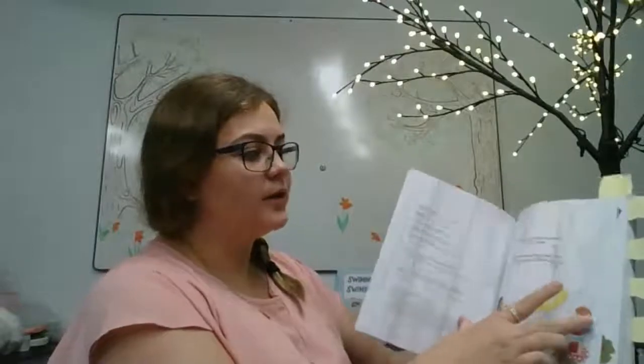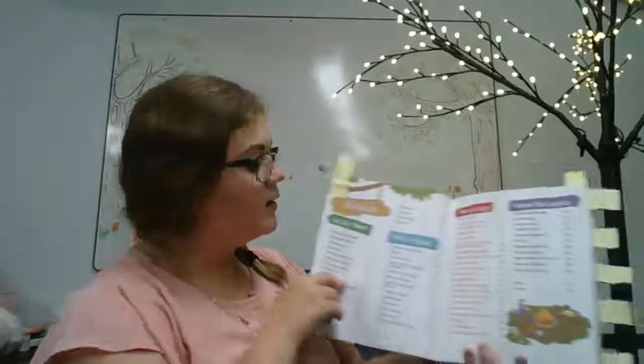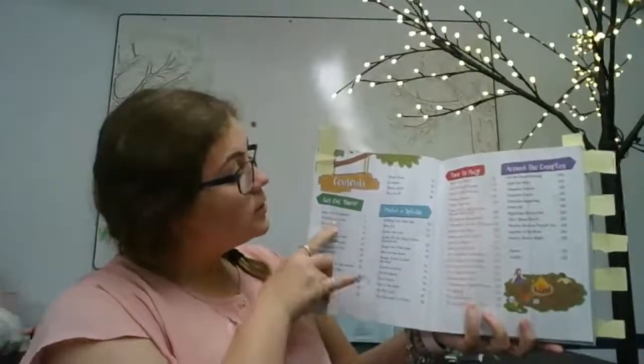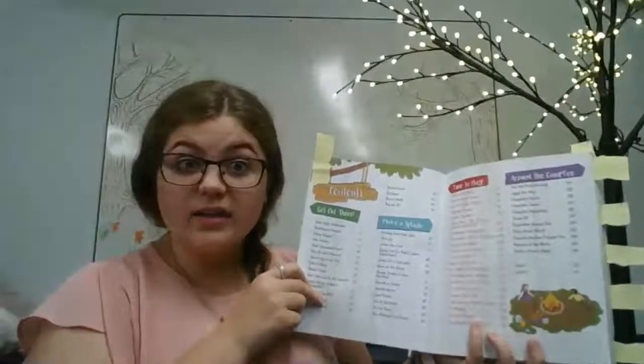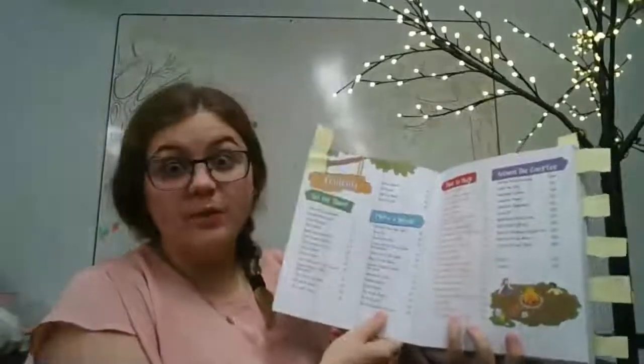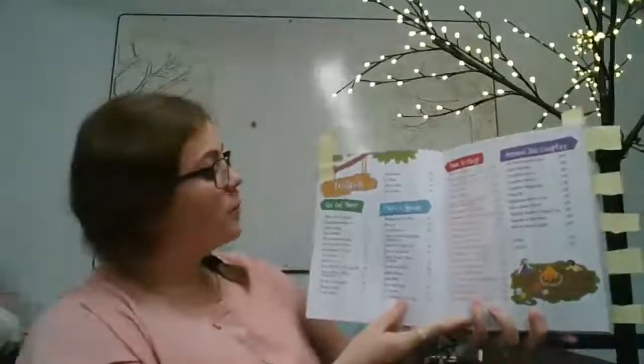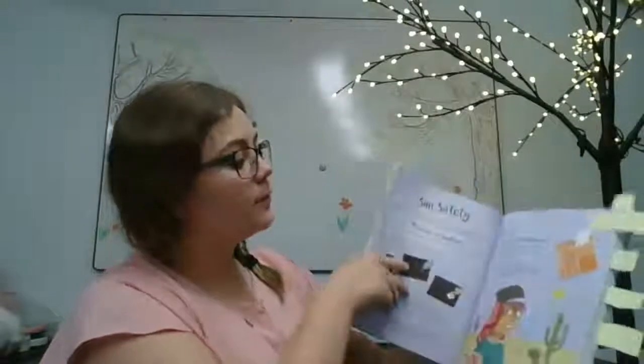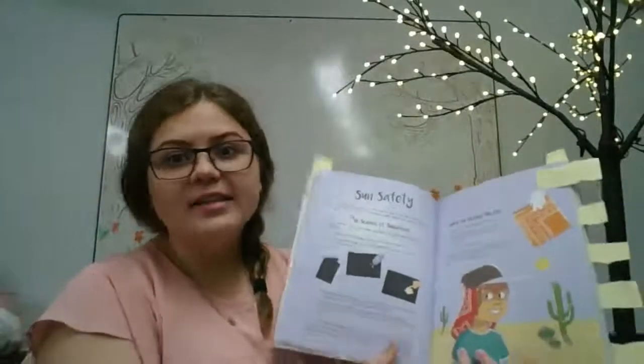So because the book is written in such a way it has a table of contents. So throughout the table of contents you can see all of the activities in the book and what page numbers they're on. So we're going to look at something from each of the sections.